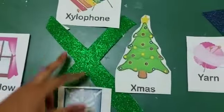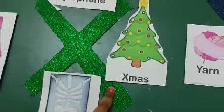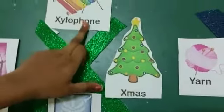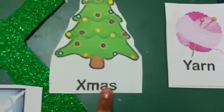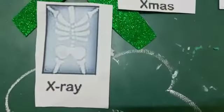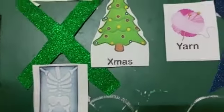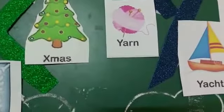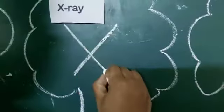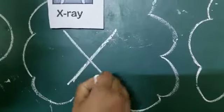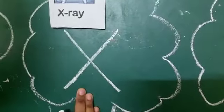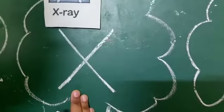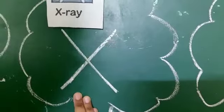Next letter is capital X. What is this letter called? This letter is called capital X. X for Xylophone. X for X-ray. How to write letter X? One right slant line and one left slant line. This letter is called capital X. X sound is X.